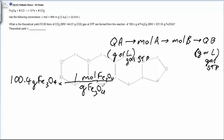The relationship between these two: one mole of Fe3O4 is equal to the molecular weight, which is 231.55 grams of Fe3O4. Moles of Fe3O4 goes on the bottom.